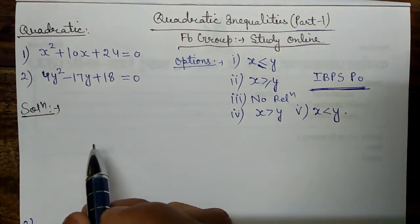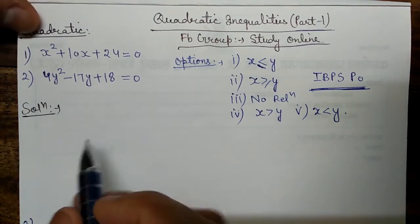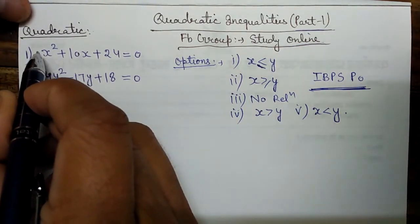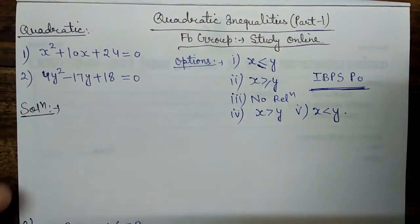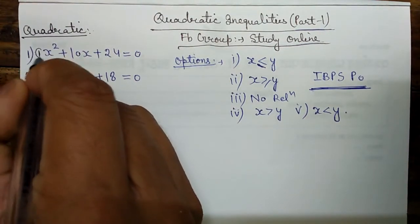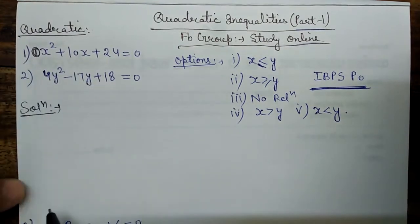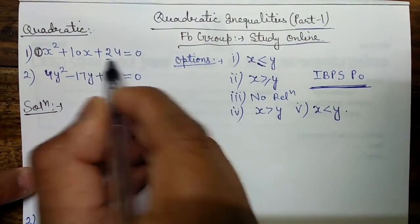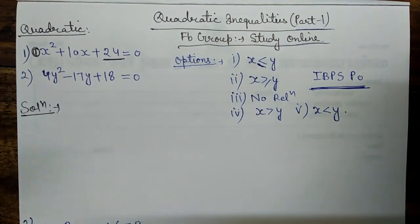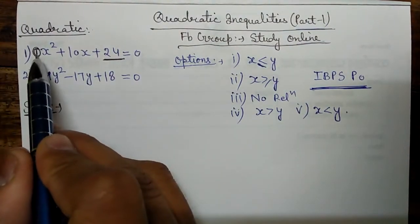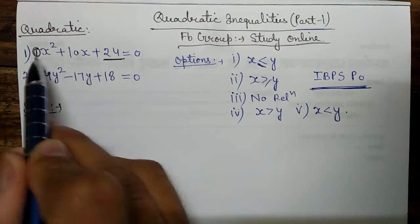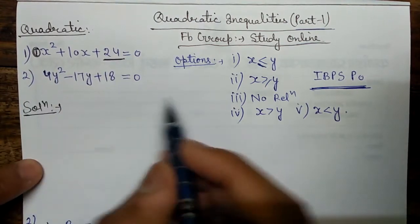In the first step, we have to find the coefficient of x². Here it is 1. And the constant value is 24. Now we multiply the coefficient by the constant: 1 × 24 = 24.